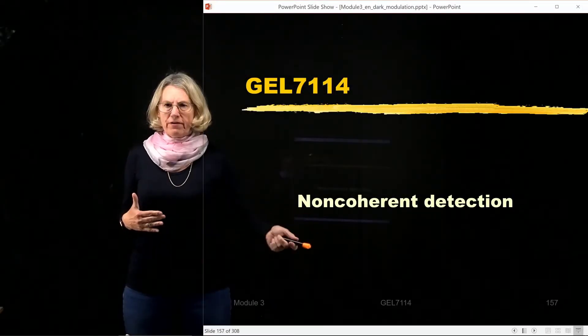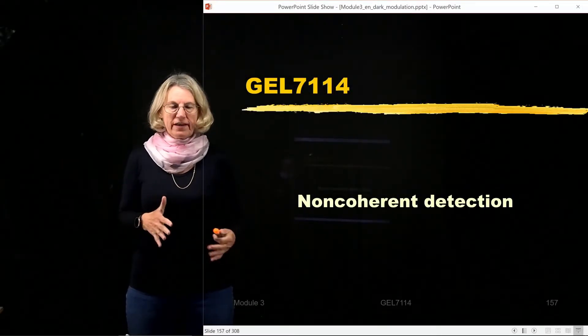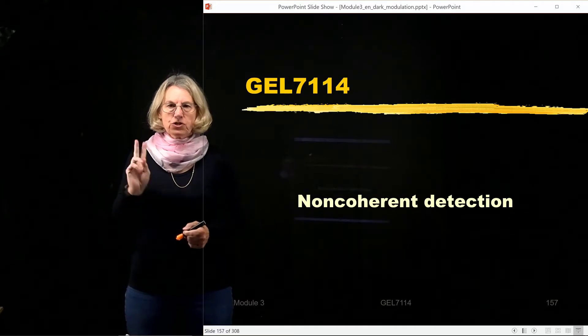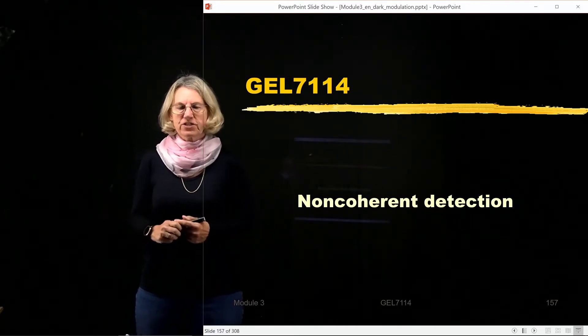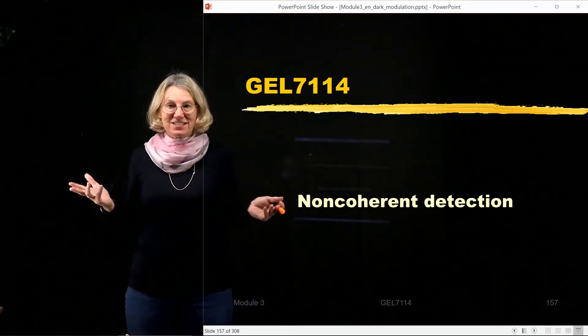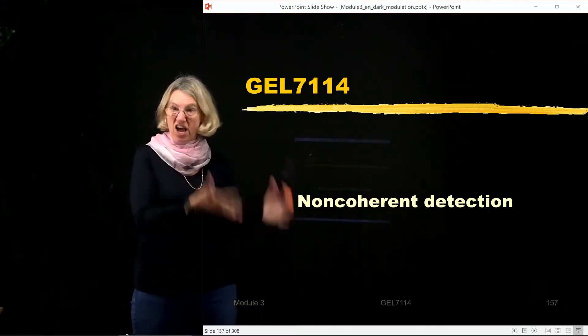So now we're going to talk about non-coherent detection. Up until now, we've always been talking about coherent detection. And there's two important aspects I want you to remember about non-coherent detection. First of all, why does it exist? Why do we have both coherent detection and non-coherent detection?